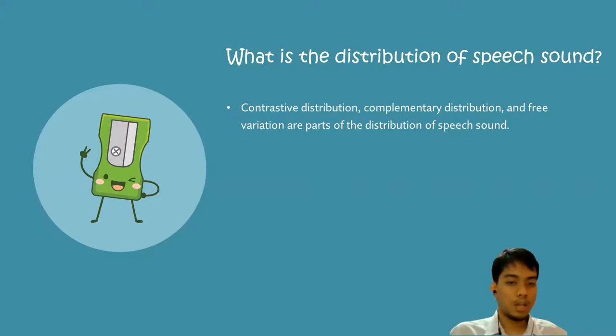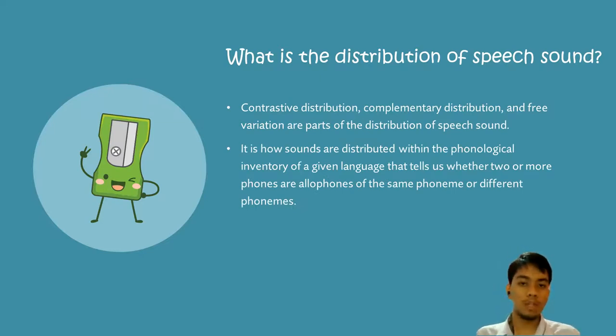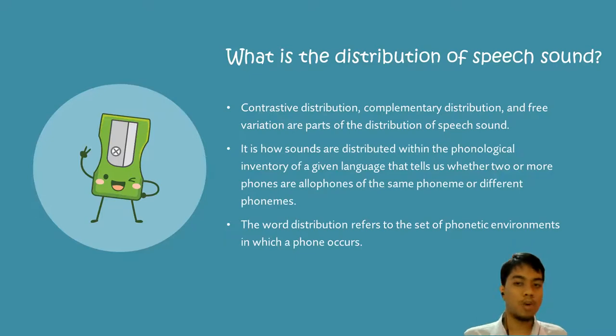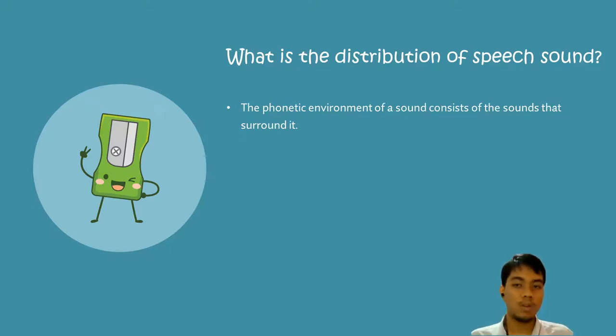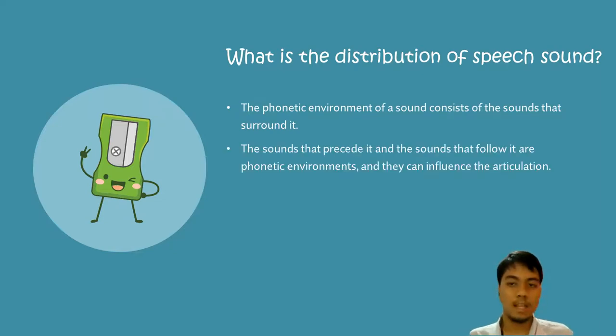So after we understand about that thing, let's go to the next thing. What is the distribution of speech sound? Contrastive distribution, complementary distribution, and free variation are parts of the distribution of speech sound. It is how sounds are distributed within the phonological inventory of a given language that tells us whether two or more phones are allophones of the same phoneme or different phonemes. The word distribution refers to the set of phonetic environments in which a phone occurs. The phonetic environment of the sound consists of the sounds that surround it, the sounds that precede it and follow it, and they can influence the articulation.